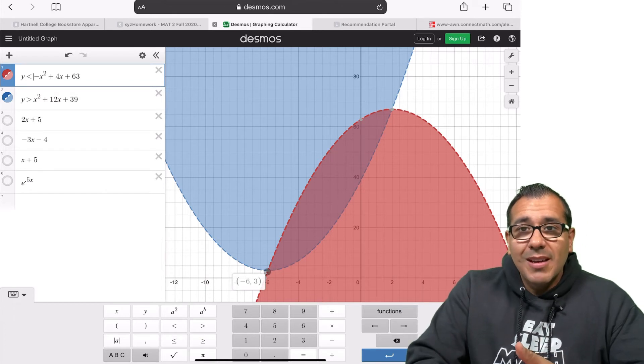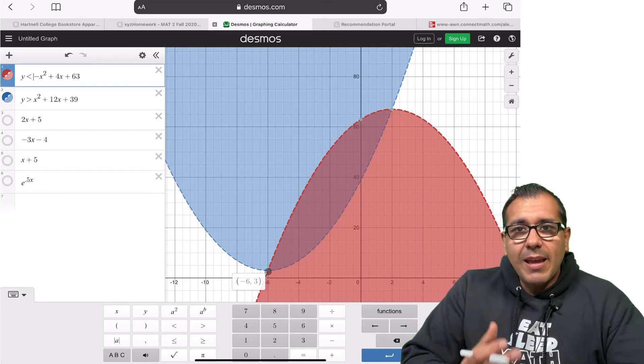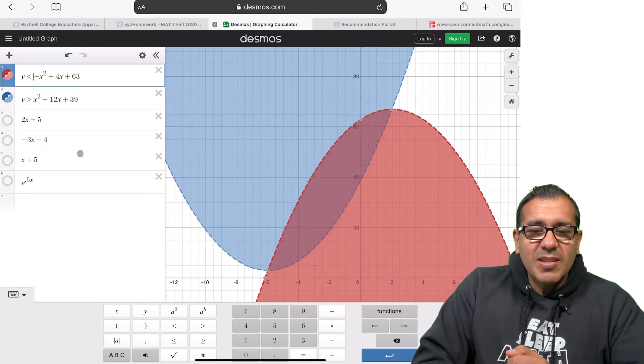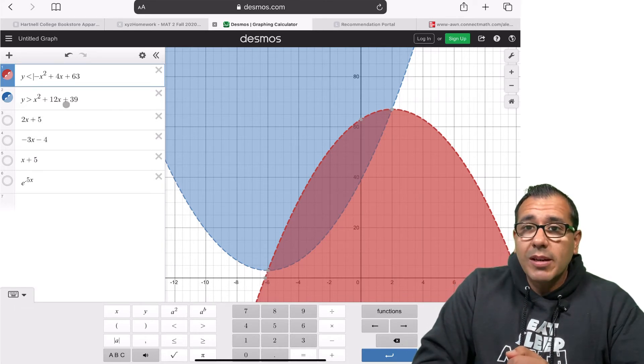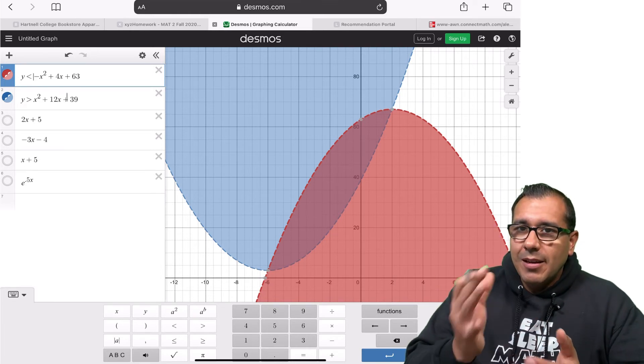And that's what's nice about Desmos here. You could easily see where it starts. If you needed to do this by hand, it's quite easy as well. We would just set these two functions equal to one another. And since in this case, they're both parabolas, you would just move everything over to one side.